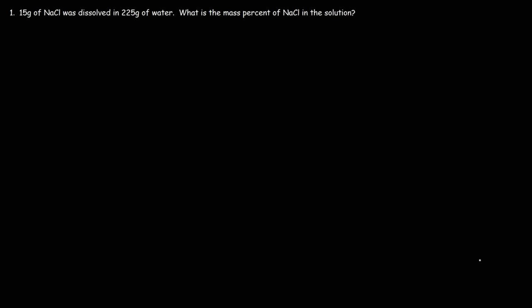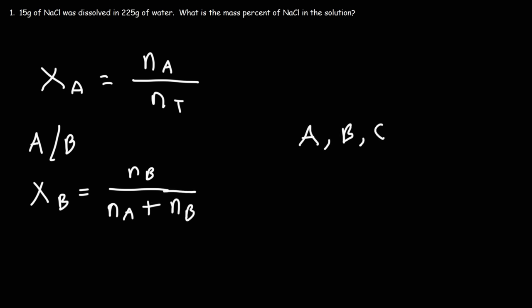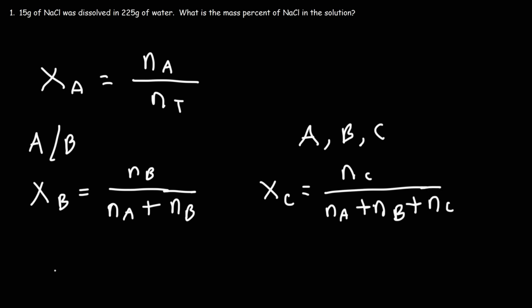Now let's talk about mole fraction. The mole fraction of substance A is equal to the moles of that substance divided by the total moles. For two substances A and B, the mole fraction of B is the moles of B divided by moles of A plus moles of B. For three substances A, B, and C, the mole fraction of C is moles of C divided by N_A plus N_B plus N_C.